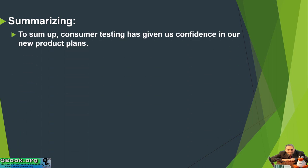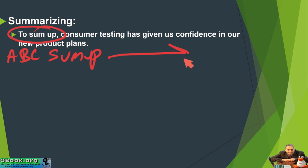To sum up — consumer testing has given us confidence in our new product plan. I really like this example because it tells you right here: 'to sum up.' This means I was just talking about A, B, and C, and now I'm going to sum up. I'm getting ready to move to another topic. So this is a very clear signal that I'm finishing this part and moving on to the next part.